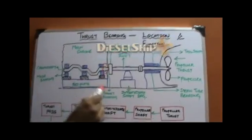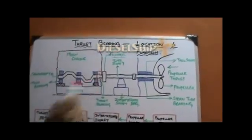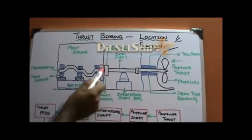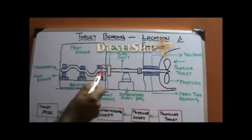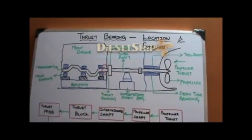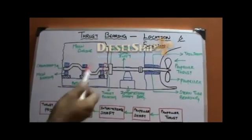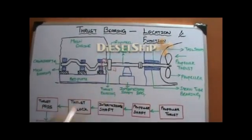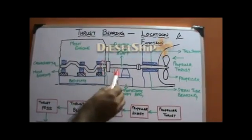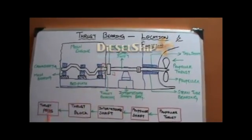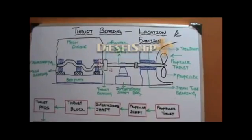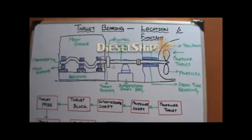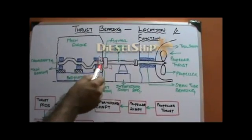Let us assume this to be the main engine complete structure. The last portion of the main engine has the thrust block — it is an integral part of the main engine. 15 to 20 years before, you would find the thrust block outside the main engine as a separate unit to absorb the propeller thrust. But currently, the recent trend is to make the thrust block an integral part of the main engine at its aft-most unit.